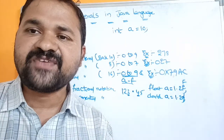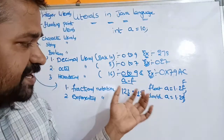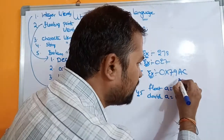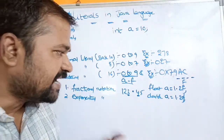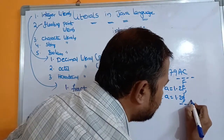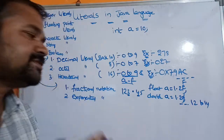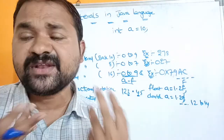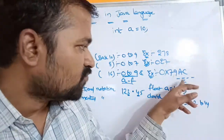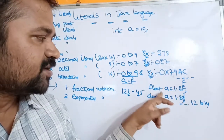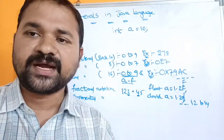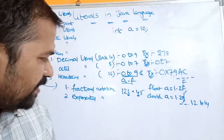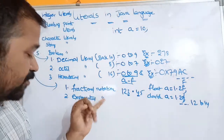The major difference between float and double is accuracy. With float, you can store four to six digits after the decimal point, whereas with double you can store approximately twelve to fourteen digits after the decimal point. So if accuracy is important and you need more precision, you should use double.